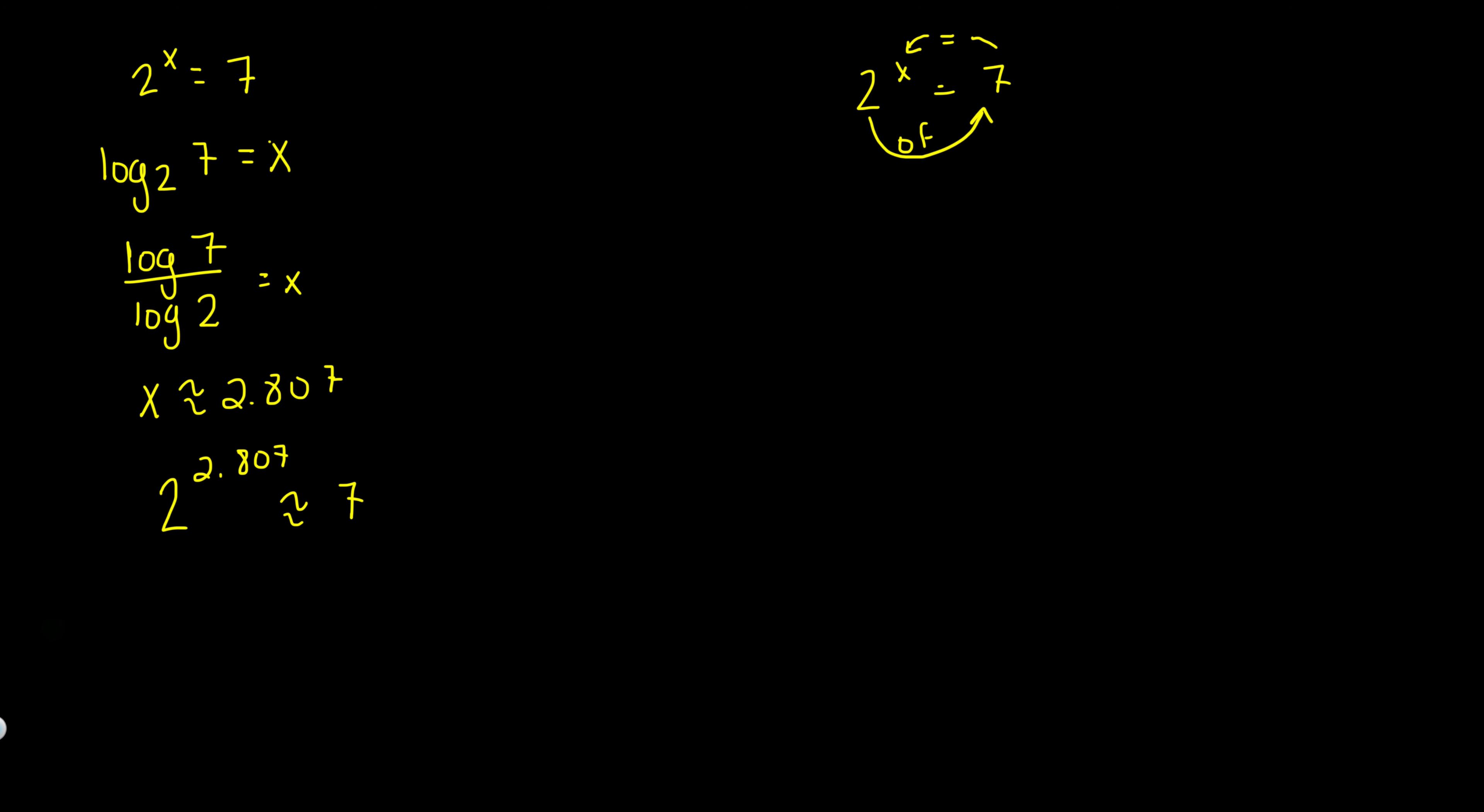Another thing that I would do other than just doing the change of base formula is I'd have 2^x = 7 and I would just log both sides. Then you get that power property, this moves forward, so x log 2 equals log 7. Divide this by log 2 to isolate x, and look, we get the same change of base formula here: log 7 over log 2, which is approximately 2.807.